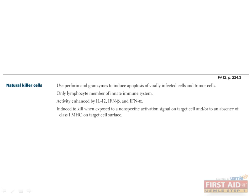Natural killer cells are the only lymphocytes in the innate immune system. They use perforin and granzymes to induce apoptosis of virally infected cells and tumor cells. The activity of these lymphocytes is enhanced by IL-12, interferon beta, and interferon alpha.